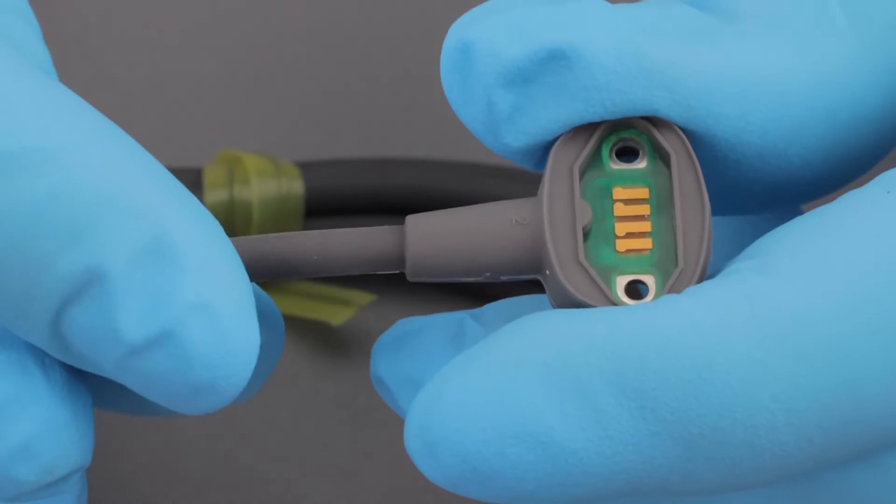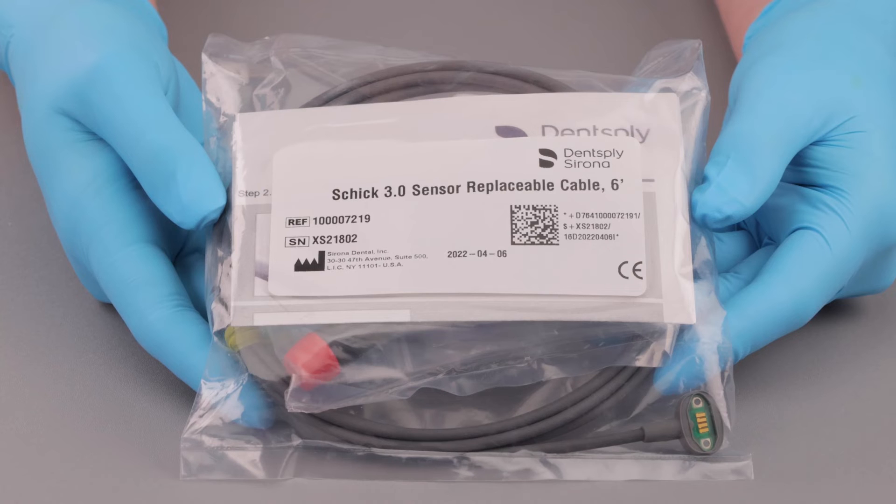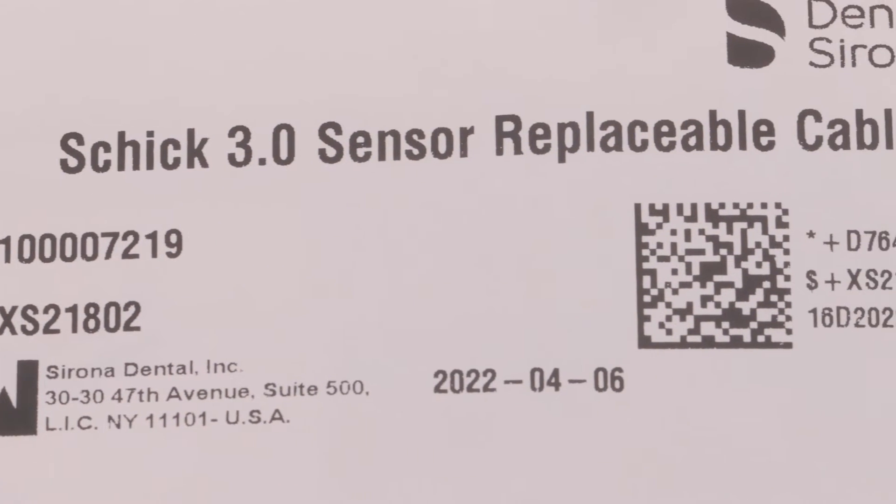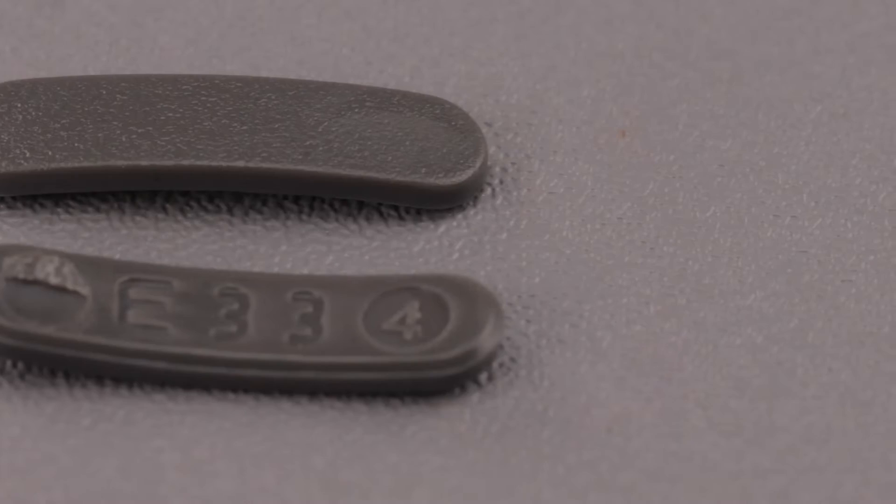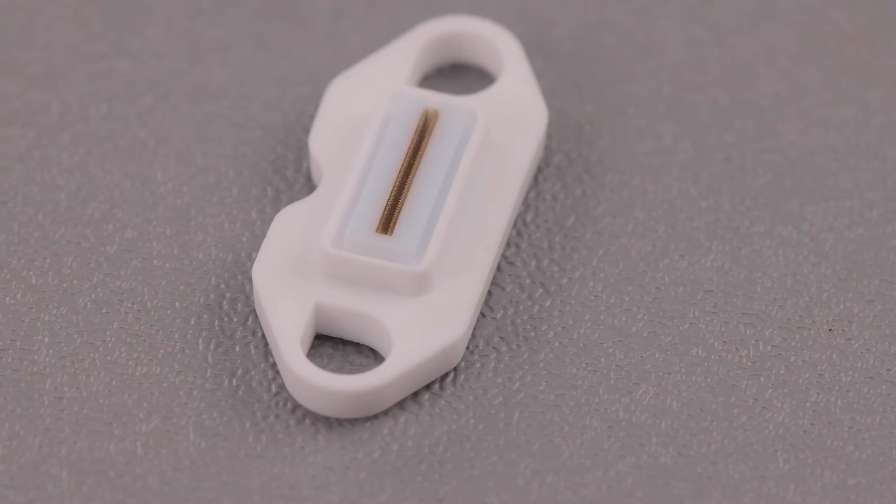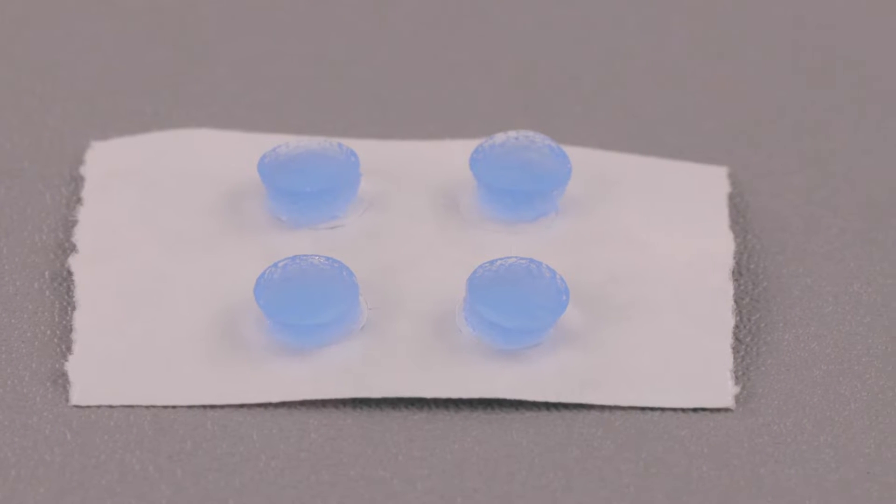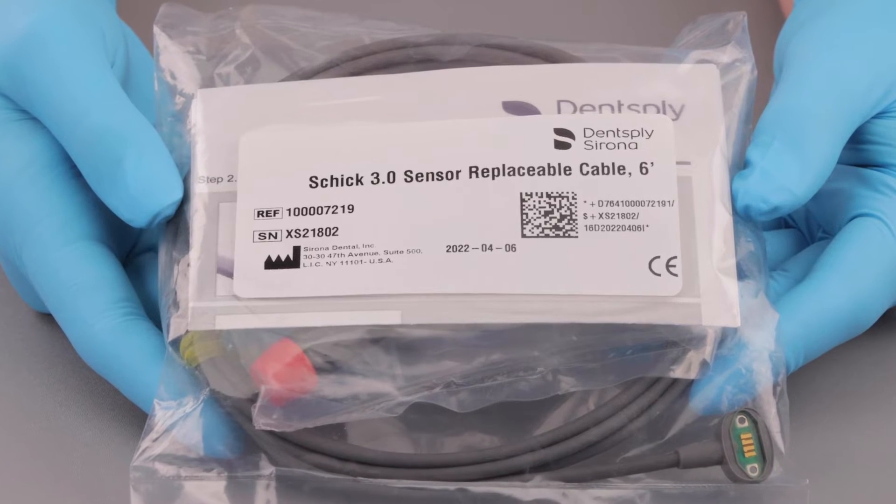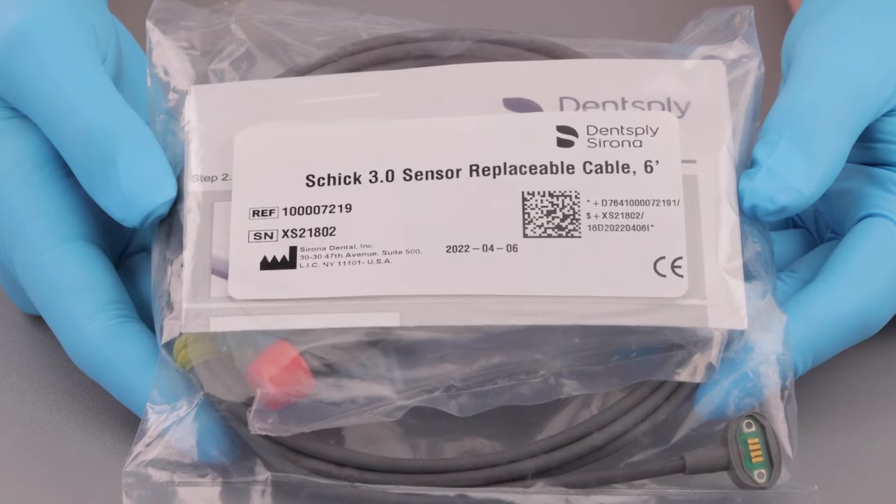Each Schick replacement cable kit includes all of the necessary components for the Schick 2.0 to 3.0 cable upgrade. These components include replacement screws, replacement covers, replacement elastomeric strips, replacement gel discs, and a replacement cable. There are extra replacement parts in each kit in case you misplace one during the cable exchange process.